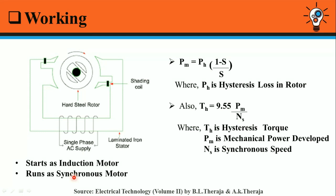However, the rotor poles always lag behind the stator poles by an angle alpha. Mechanical power developed is given by: PM = PH × (1 − S) / S, where PM is the mechanical power developed, PH is the hysteresis loss in the rotor, and S is the slip of the motor. Also, the hysteresis torque TH is given as: TH = 9.55 × PM / NS, where TH is the hysteresis torque, PM is the mechanical power developed, and NS is the synchronous speed.